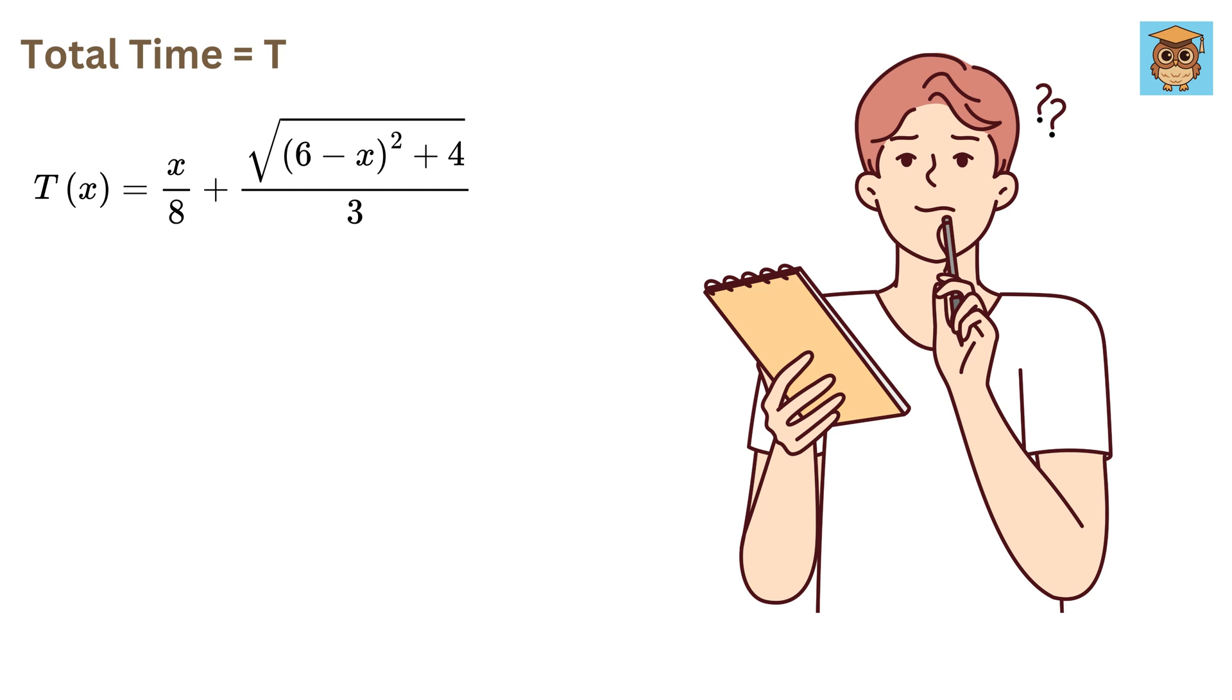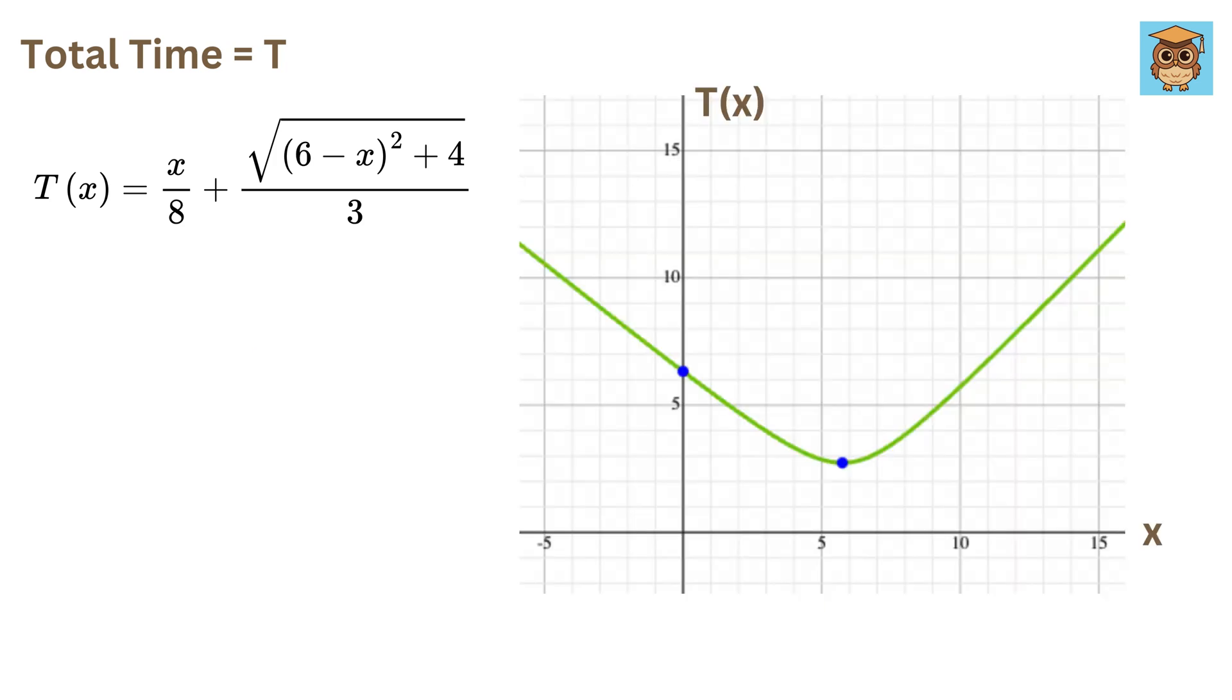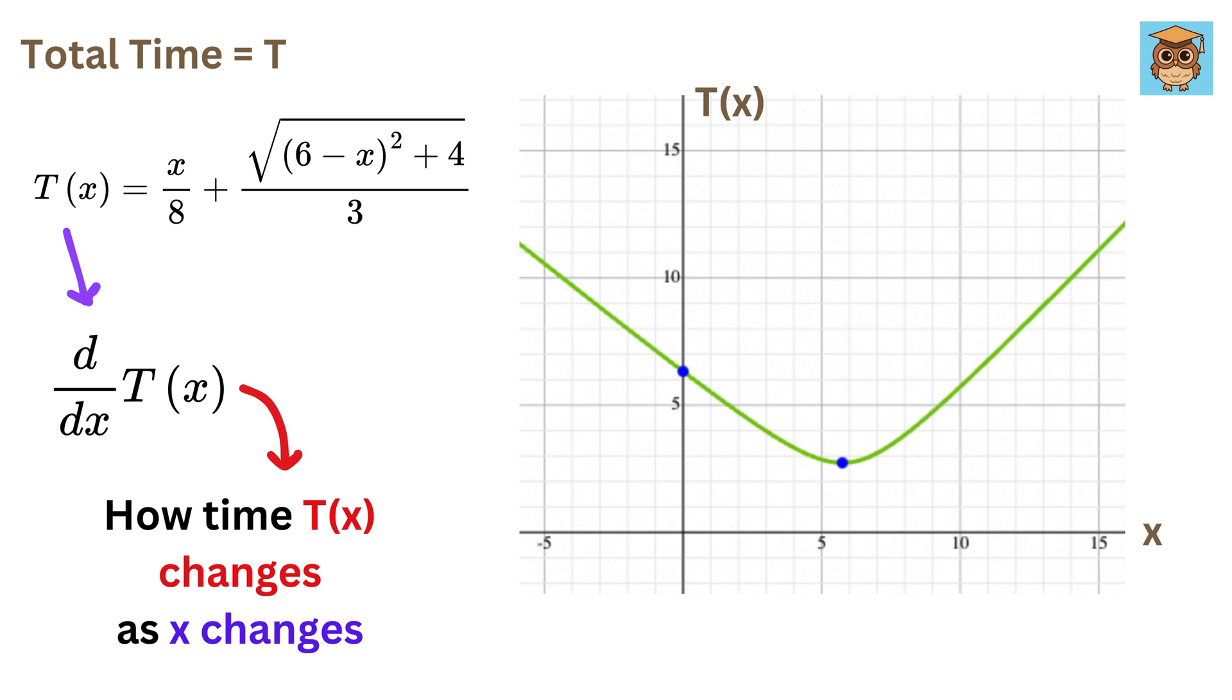To mathematically figure out the quickest way for Alex to reach the island, we use calculus. In my previous video on derivatives, I told you that by taking the derivative of a function, which in our case is this T of X, we can figure out how the time changes as X changes, and a derivative is essentially the slope of a function at a given point.